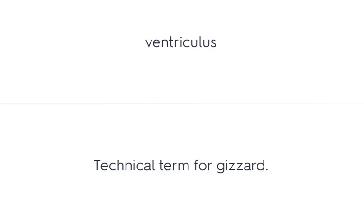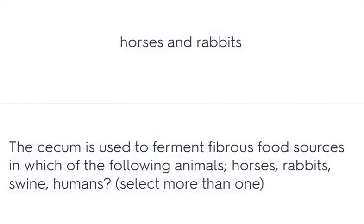Ventriculus – technical term for gizzard. Horses and rabbits – the cecum is used to ferment fibrous food sources in which of the following animals? Horses, rabbits, swine, or humans.